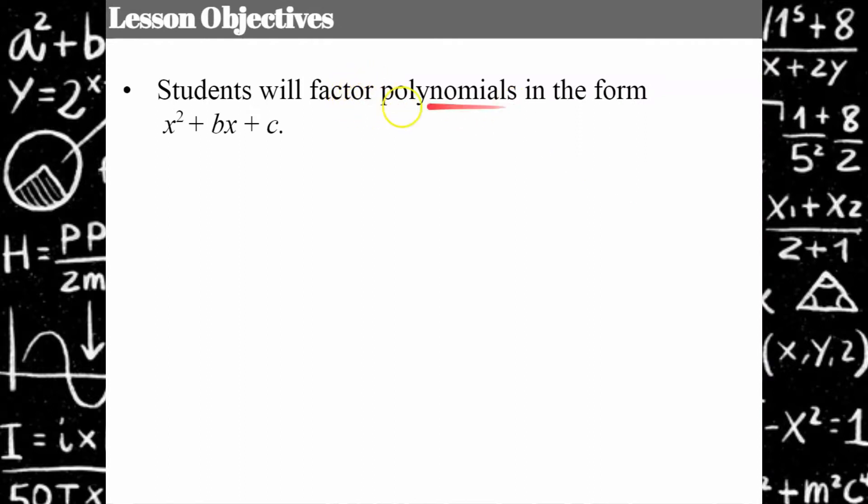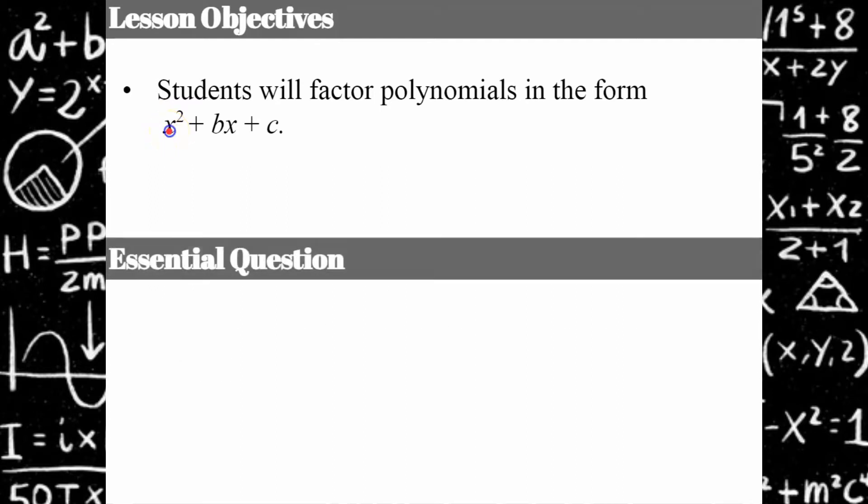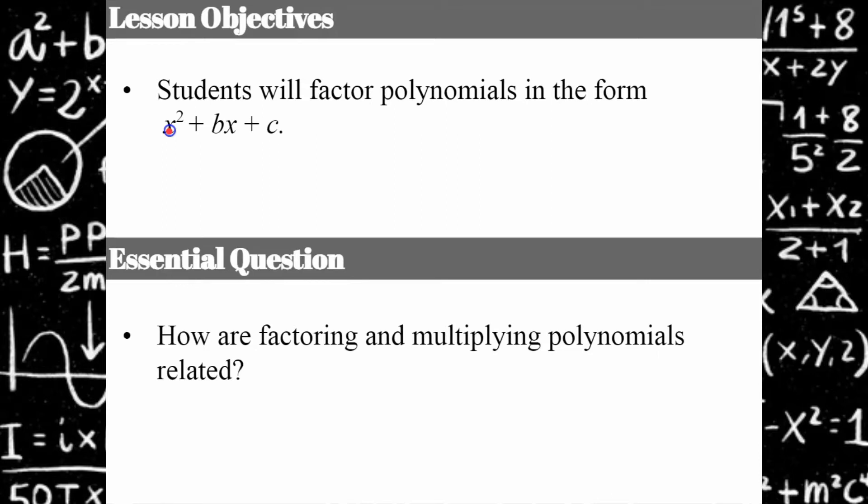Today you're going to factor polynomials in this form. The big difference here is this a. For this lesson a is one, so there is a coefficient here that's invisible because it's one. Our essential question today is how are factoring and multiplying polynomials related?